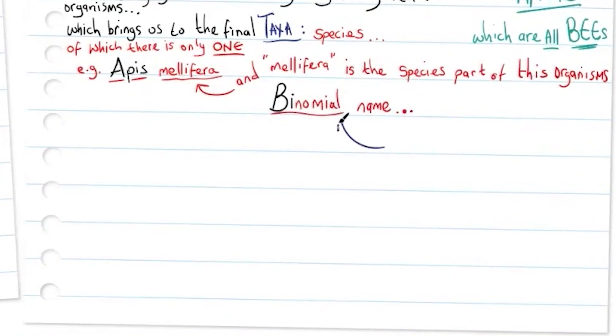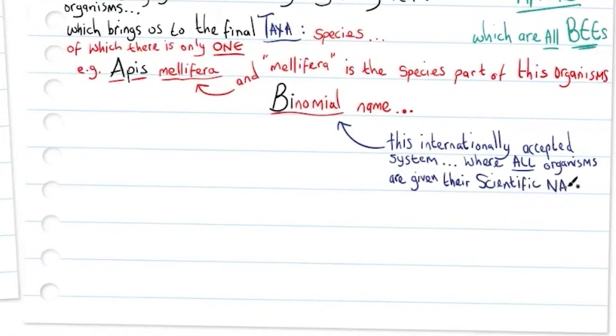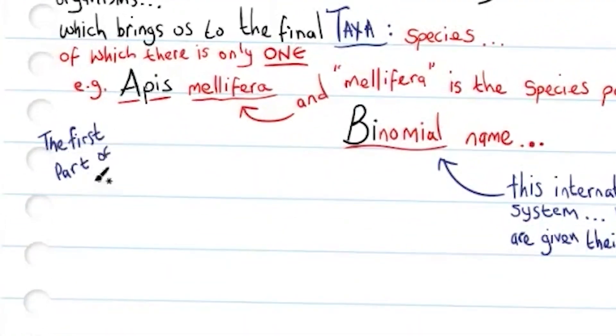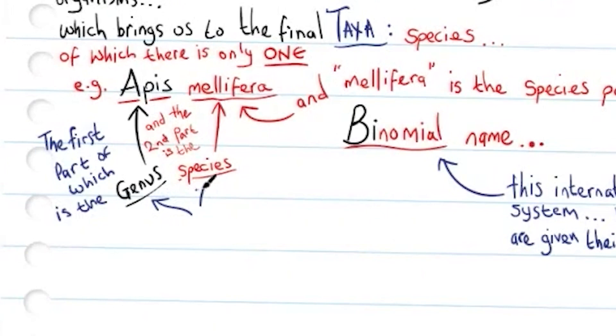The binomial name, or two-part name, is this internationally accepted system where all organisms are given their scientific name. The first part is the genus, Apis in this example, and the second part is the species, mellifera. So Apis mellifera is commonly known as a honeybee.